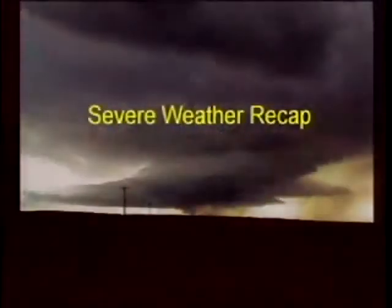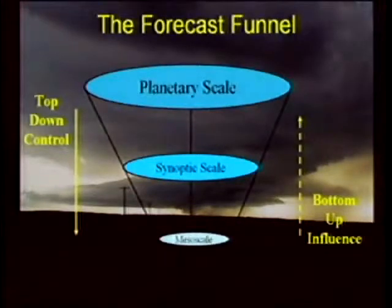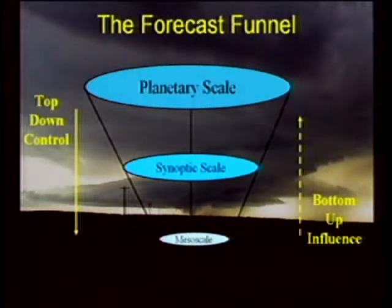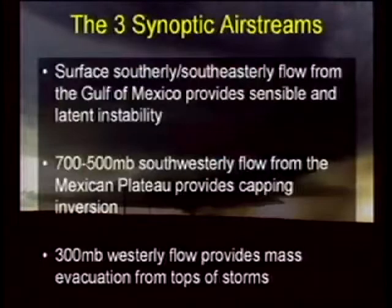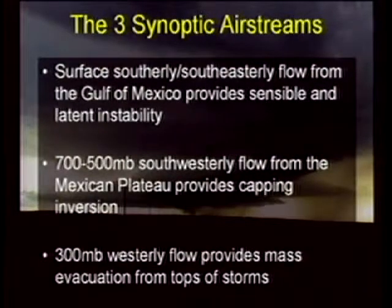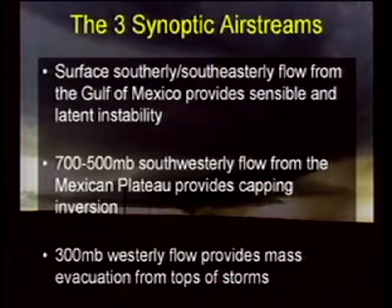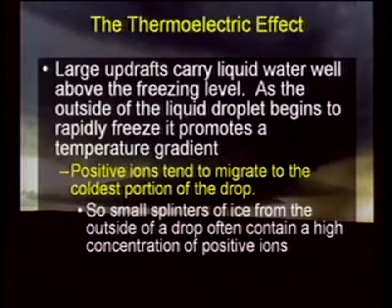Let's go to a quick recap. Here is the forecasting funnel — the hemispheric scale, the synoptic scale, the mesoscale — they all have some control over what's going to go on, but you can influence things back upward from those smaller scales too. If you remember early on, we talked about three important synoptic scale airstreams: you want a surface southerly or southeasterly flow from the Gulf of Mexico providing synoptic and latent instability; you'd like a capping inversion from 700 to 500 millibars to help seal off that latent and sensible instability to help it build throughout the day; and then you want some jet streak level to help evacuate the mass as well as potentially provide lifting mechanisms.